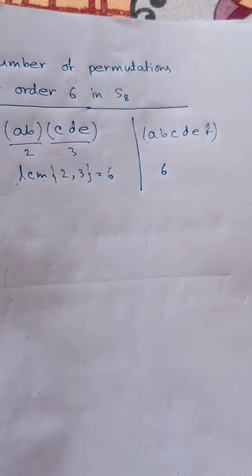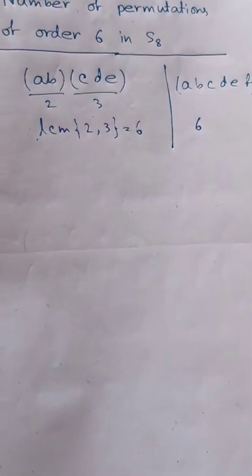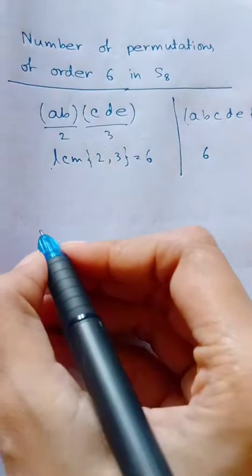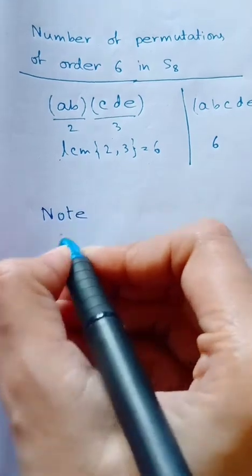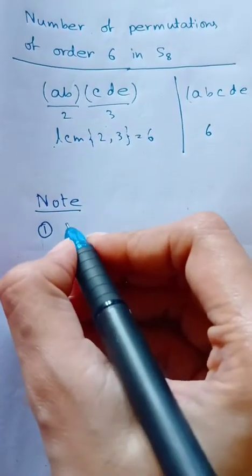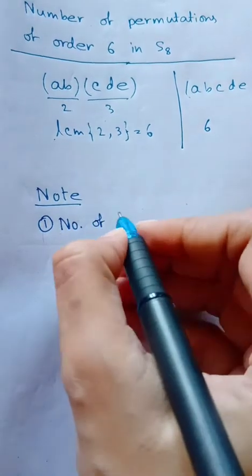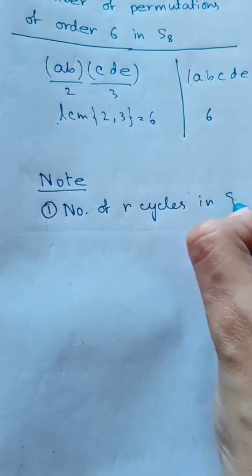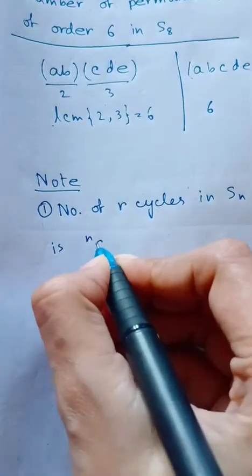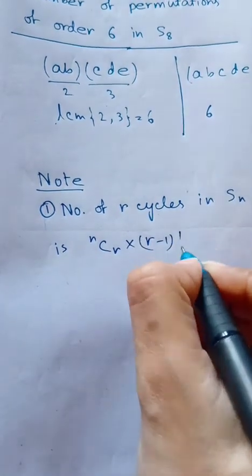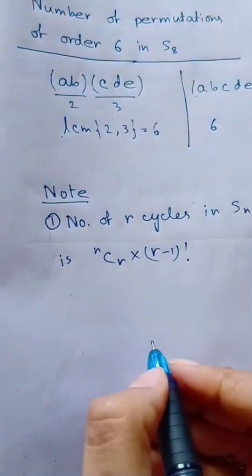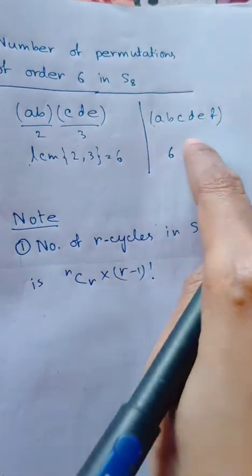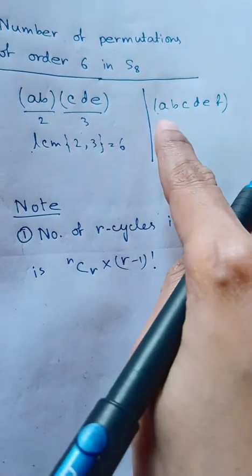Now, note the first formula: the number of r-cycles in Sₙ is nCr times (r−1) factorial. Since the second type is a 6-cycle, r is equal to 6 here.